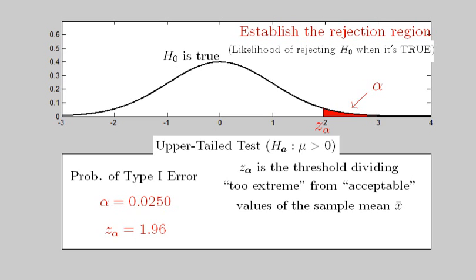Note that several common choices of alpha and their corresponding z values are shown. A Type 1 error occurs when one rejects the null hypothesis when in fact it is true. Said another way, when the test statistic computed from a random sample is too extreme, then we reject H naught.